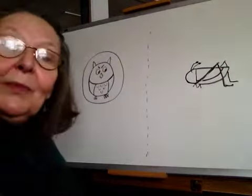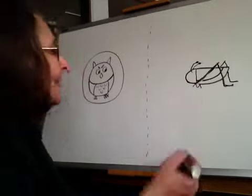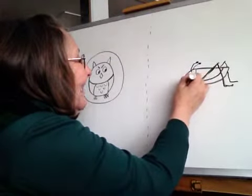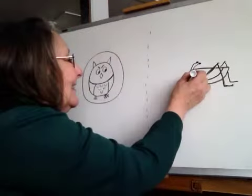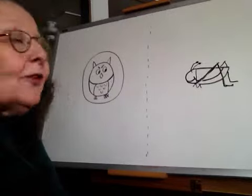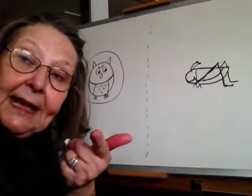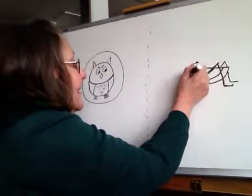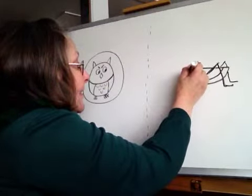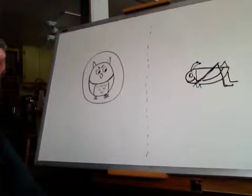And you know what? My grasshopper is going to be happy because she's singing. So I'm going to give her a nice smile on her face. Oh, she's smiling. She loves to sing. And I'm going to give her only one eye because we can only see one side of her face. We can't see the eye on the other side. So I'm going to give her a great big eye. And I'm going to put the dark part facing that way so that it looks like she's looking over at the owl.